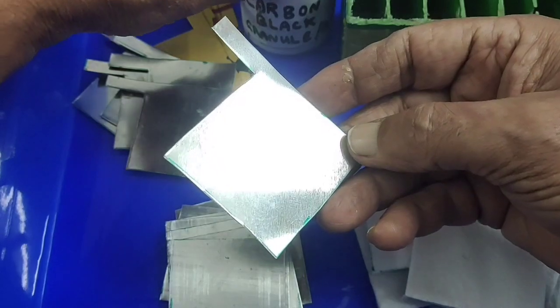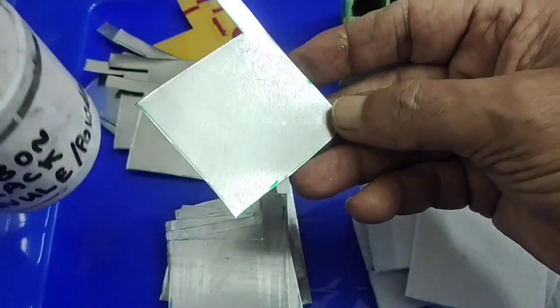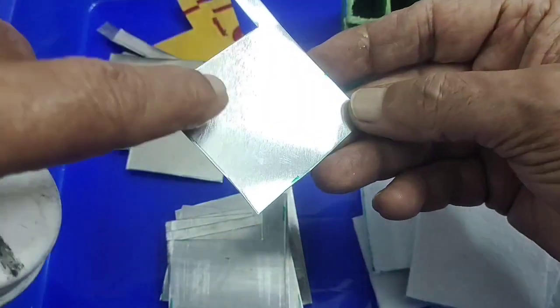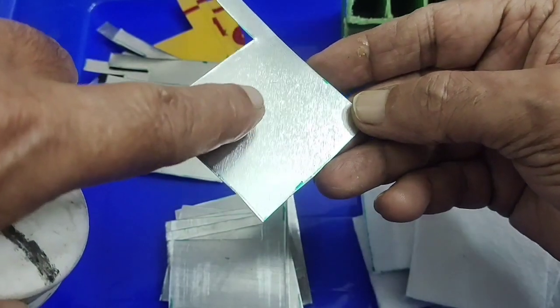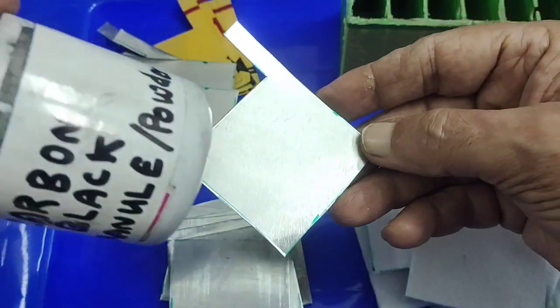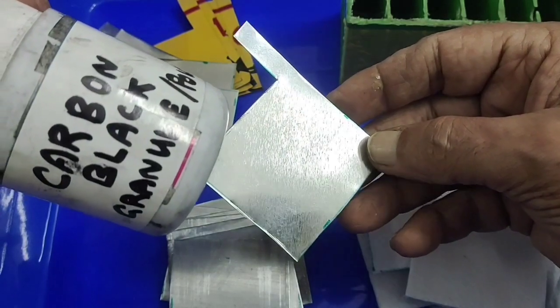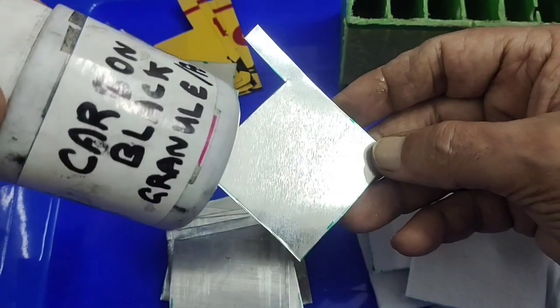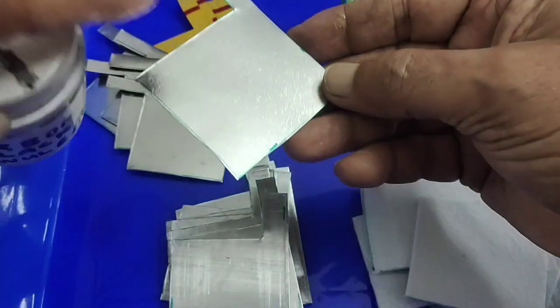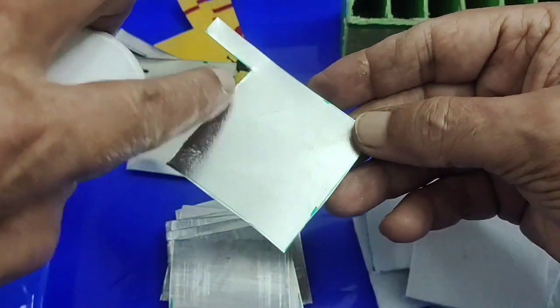You can see my previous video where I explained this well. After keeping the double-side adhesives in between, I will fill the carbon black powder.